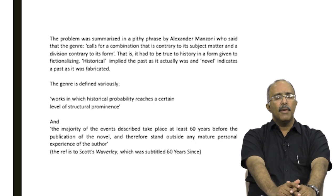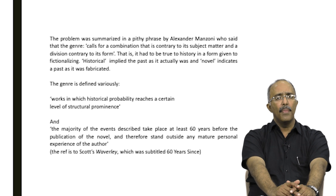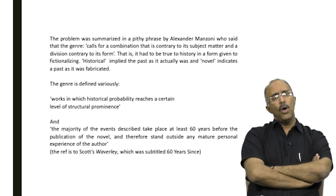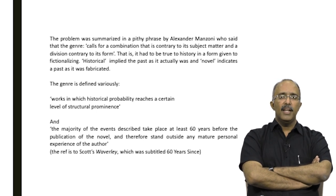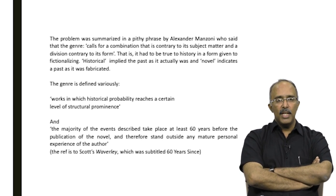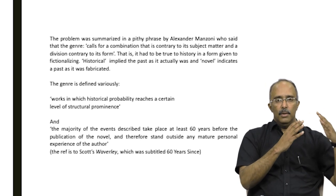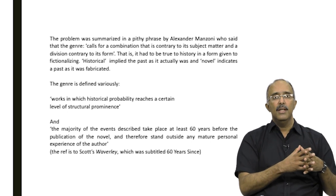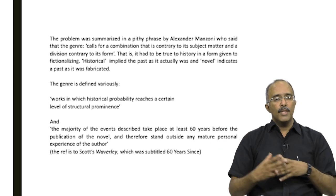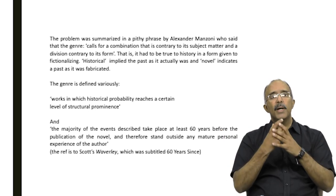The problem was summarized in a very pithy phrase by Alexander Manzoni in his work on the historical novel. He said that the historical novel genre calls for a combination that is contrary to its subject matter and a division contrary to its form. That is, the historical novel has to be true to history in a form given to fictionalizing. The historical narrative has a certain representational strategy and the novel as a form is given to fictionalizing. How do you merge them?